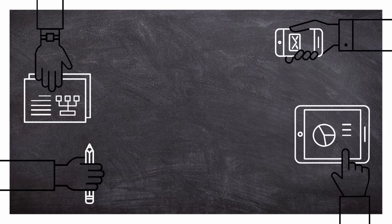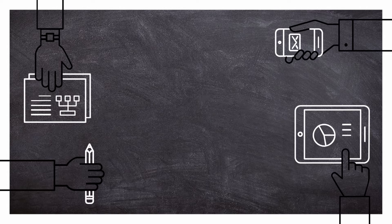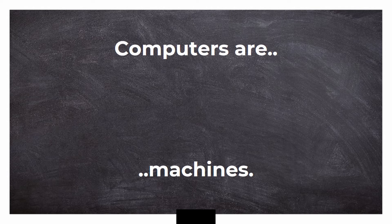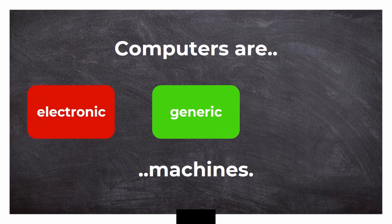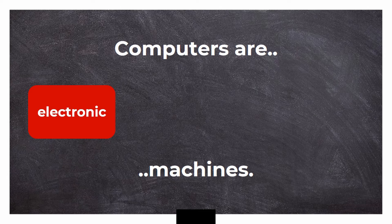Let's have quiz time. Question number one: Computers are electronic, generic, or natural machines. What is your answer? Computers are electronic machines.